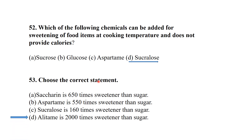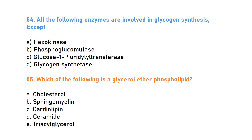Which chemical can be added for sweetening food items at cooking temperature without providing calories? It is sucralose. Alitame is two thousand times sweeter than sugar. All of the following enzymes are involved in glycogen synthesis except glycogen synthetase — glycogen synthetase is actually involved in glycogen synthesis. Which of the following is a glycerol ether phospholipid? It is cardiolipin. These are the 55 most important MCQs on carbohydrates metabolism and bioenergetics. In the next lecture we will discuss more MCQs on carbohydrates metabolism.